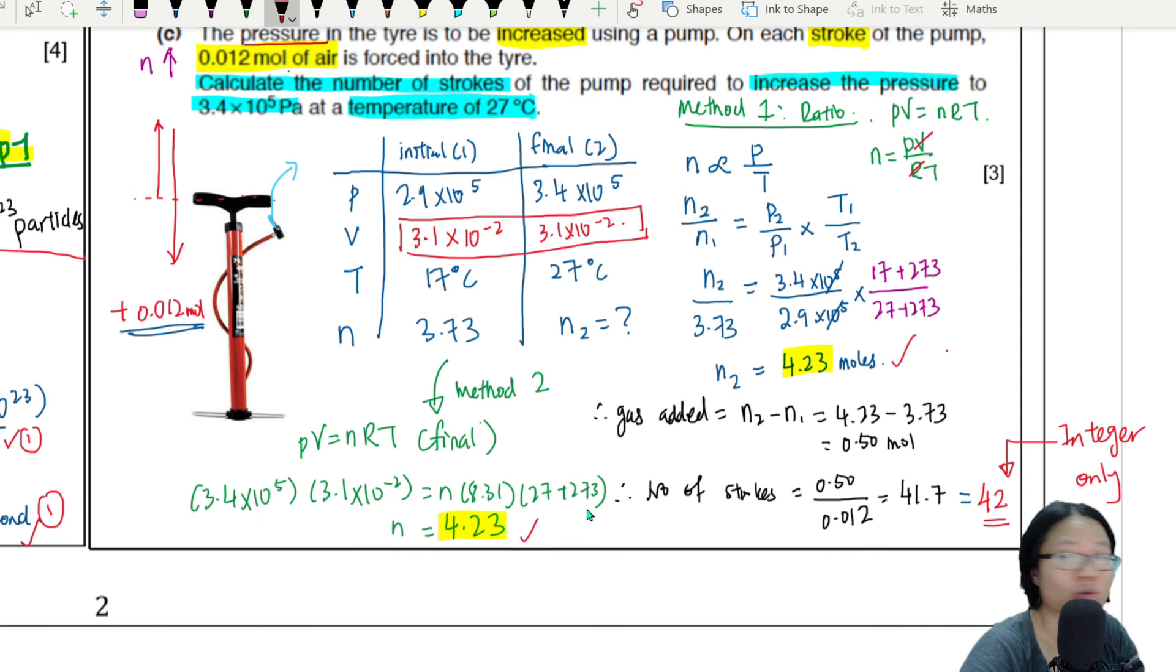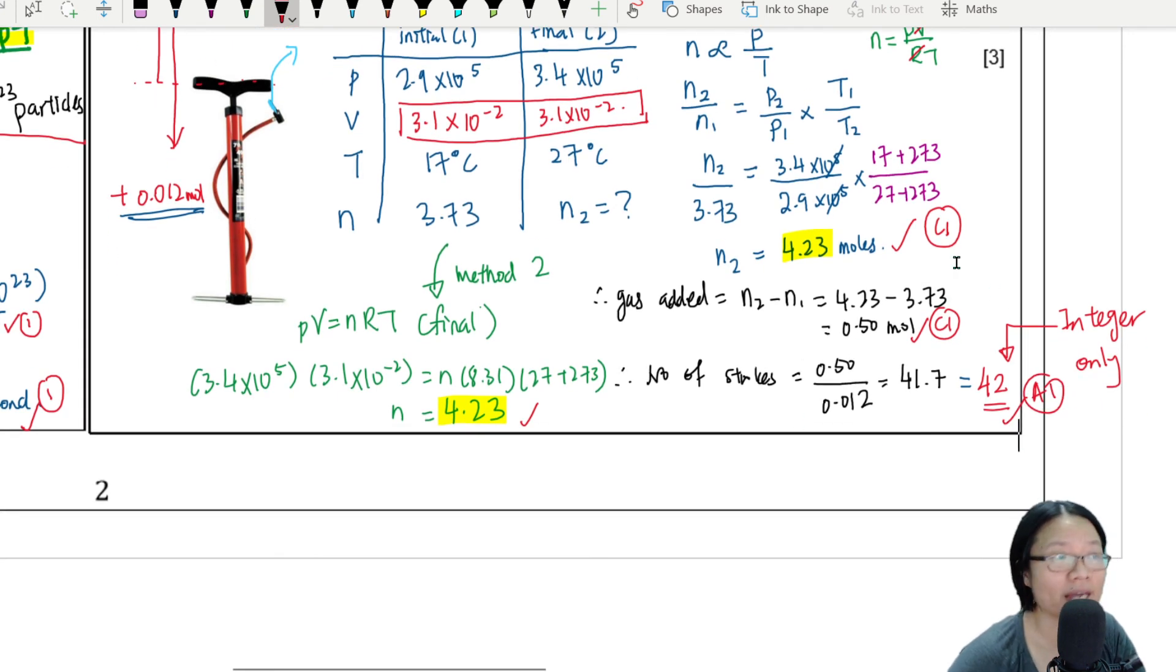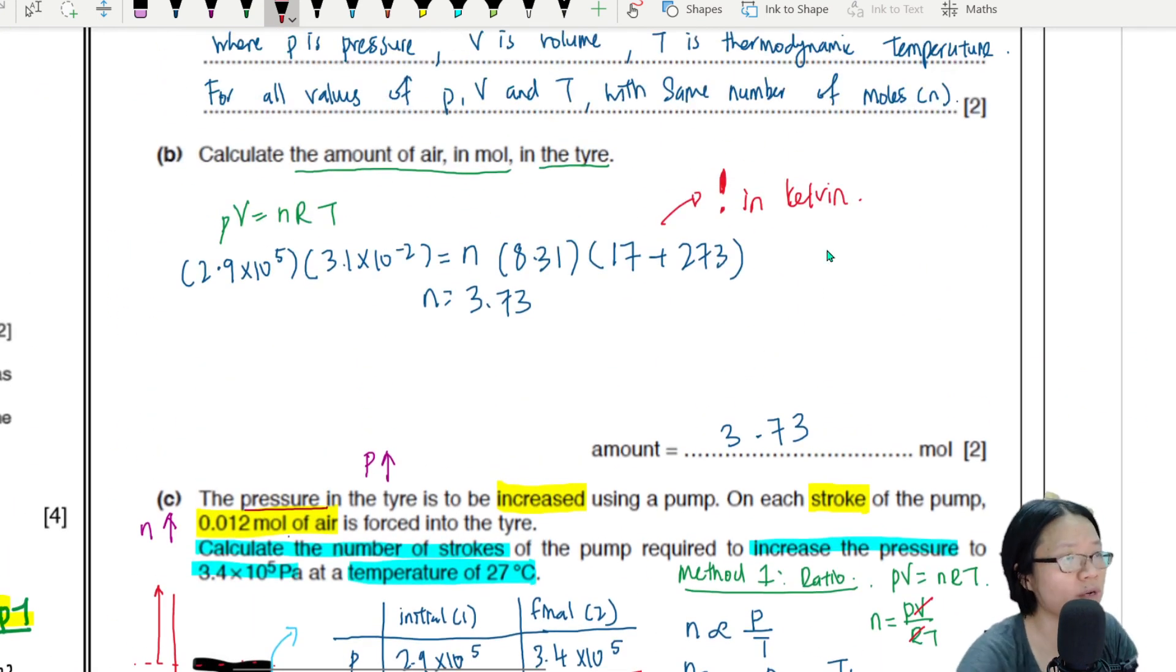Okay, and then you find the change - that is C1 - and then your final answer with integer only, this one will be A1.